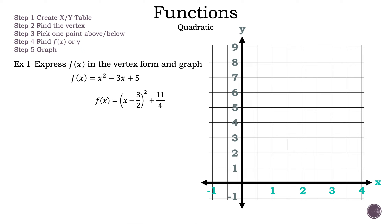The steps for the xy table are: Step 1, create an xy table. Step 2, find the vertex. Step 3, pick one point above and below. Step 4, find f of x or y. Step 5, graph. Let's start the xy table — we already know one point, the vertex. The vertex is the point 3 halves, 11 fourths.